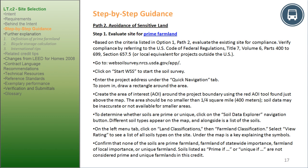Path 2, Avoidance of Sensitive Land. Step 1: Evaluate site for prime farmland. Based on the criteria in Option 1, Path 2, verify compliance by referring to U.S. Code of Federal Regulations, Title VII, Volume VI, Parts 400–699, Section 657.5, or equivalent for projects outside the U.S. Visit www.websoilsurvey.nrcs.usda.gov. Click Start WSS, enter the project address under the Quick Navigation tab, draw a rectangle to zoom in, and create the Area of Interest (AOI) around the project boundary using the red AOI tool. The area should be no smaller than one-fourth square mile (400 meters); soil data may be inaccurate or unavailable for smaller areas.